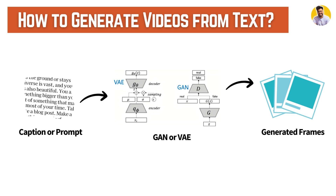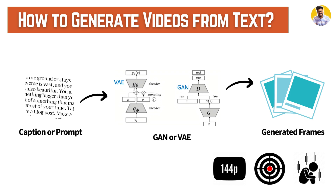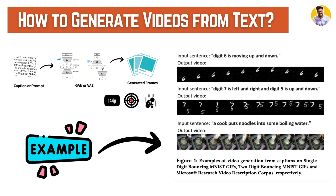The generated videos from earlier models are not completely high quality — they are low-resolution, short-range, and isolated or singular-motion videos only. For example, if you give it a prompt that 'digit 6 is moving up and down' from the MNIST dataset, it generates multiple frames of digit 6 moving in that direction. Similarly, if you give another prompt like 'digit 7 is left and right and digit 5 is up and down,' it requires multiple prompts to build a complete video, but those prompts give only very low-resolution or very short-range videos.